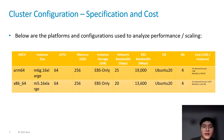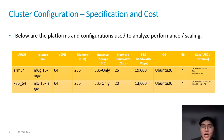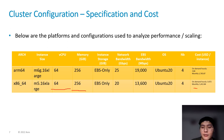Here are the instances we use. All the instances are on AWS. We use two different architectures: ARM and x86. Both architectures have the same vCPU count, same size of memory, and similar cost.